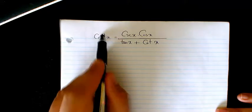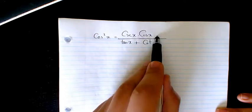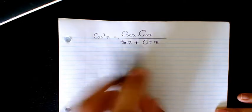Here in this video I have cosine squared x equals cosecant x times cosine x divided by tan x plus cotangent x.